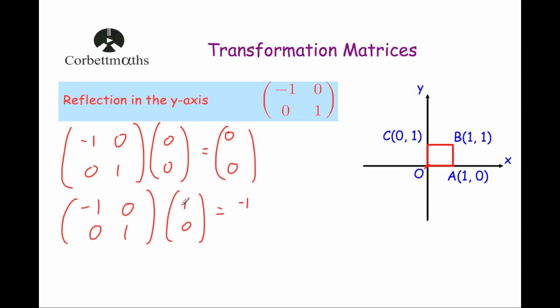And then the second row by the column: 0 times 1 is 0, 1 times 0 is 0, adding them together is 0. So that will move to the point minus 1, 0, so it will be reflected over here — that's where the point A dash will go.